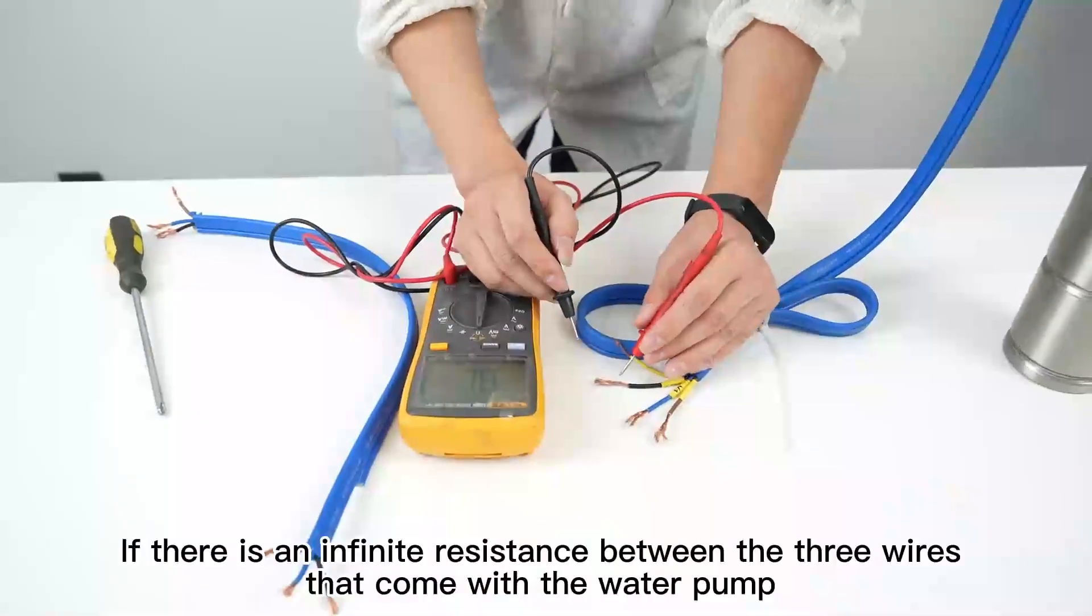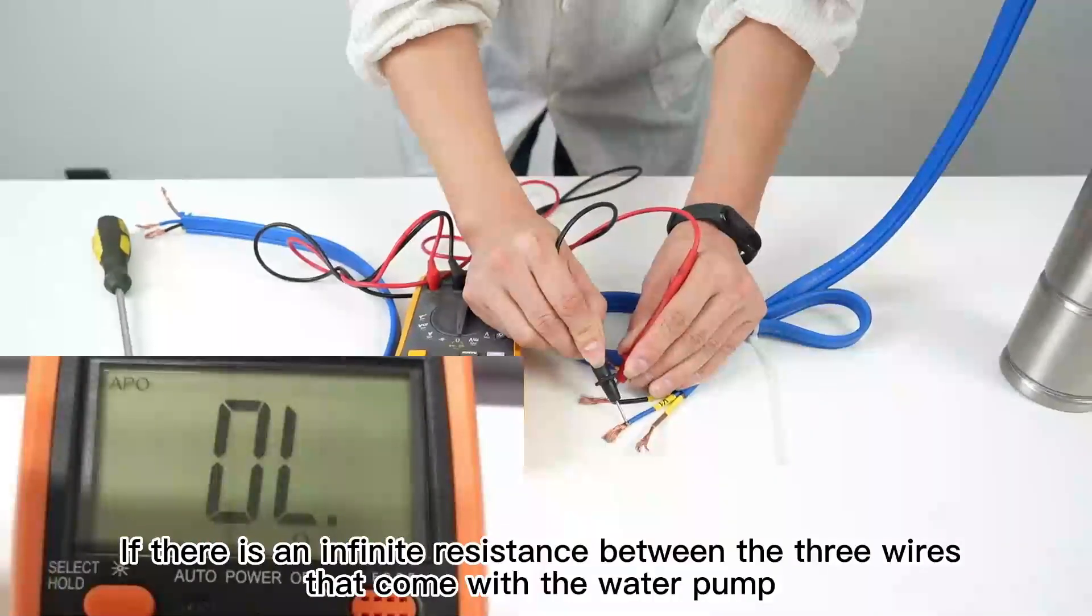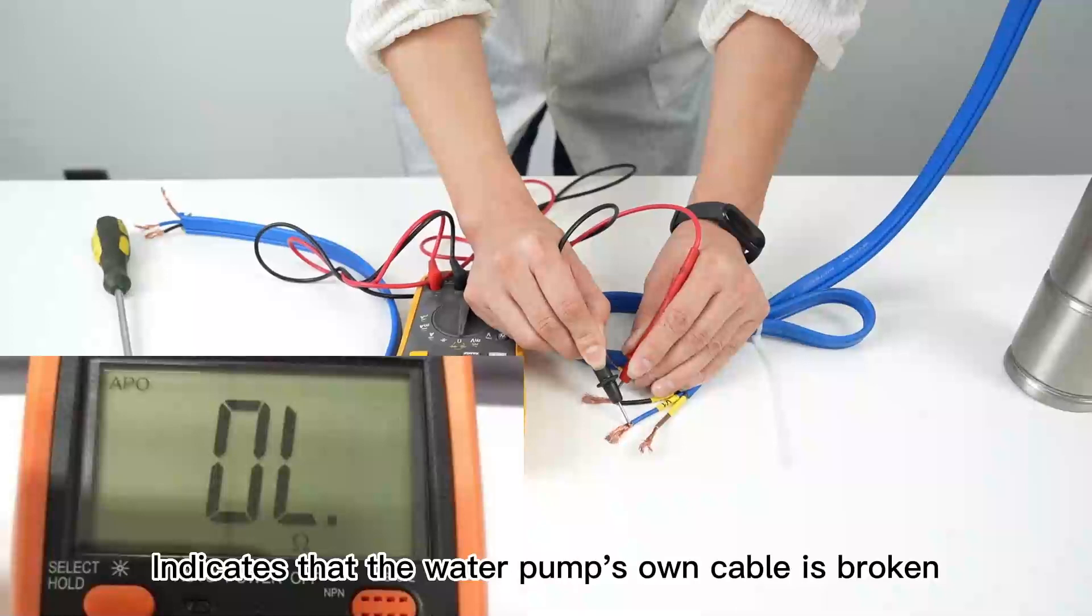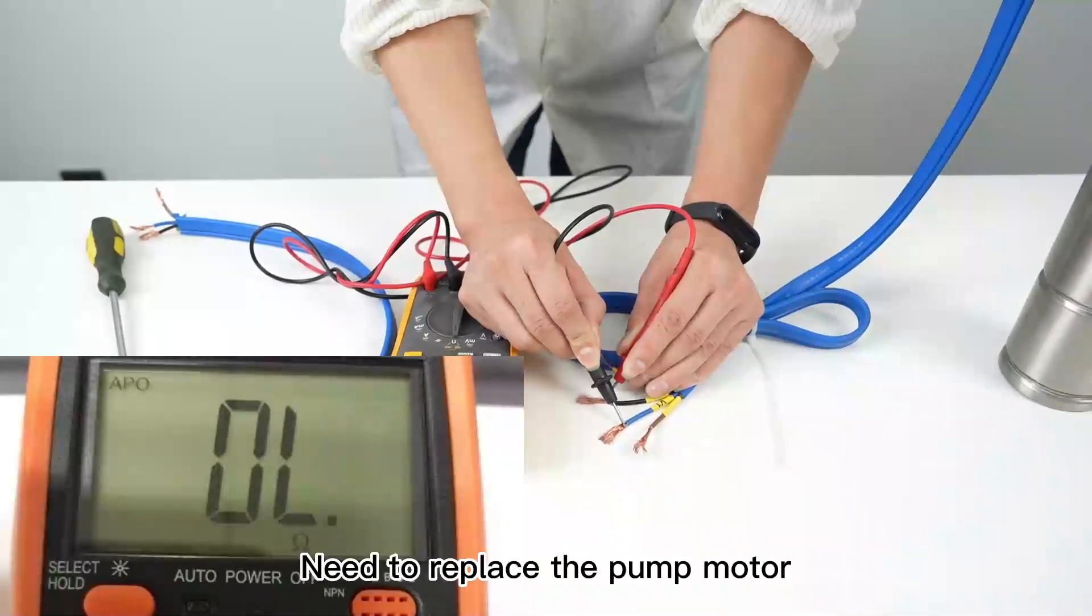If there is infinite resistance between the three wires that come with the water pump, this indicates that the water pump's own cable is broken. You need to replace the pump motor.